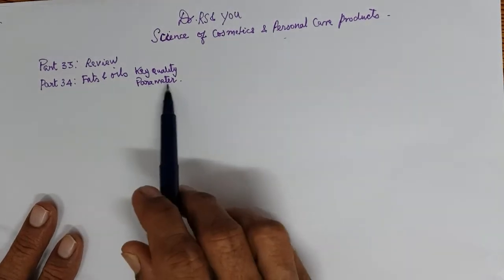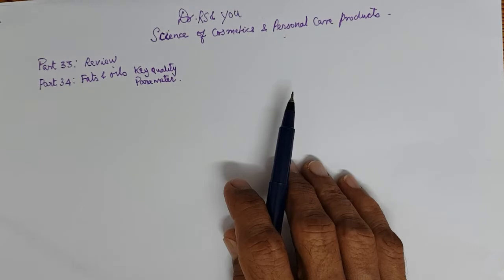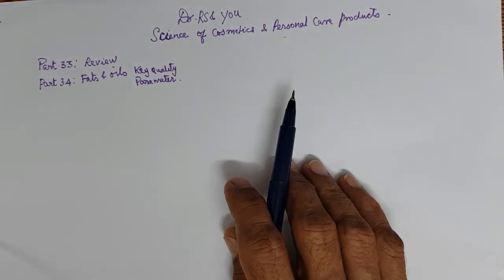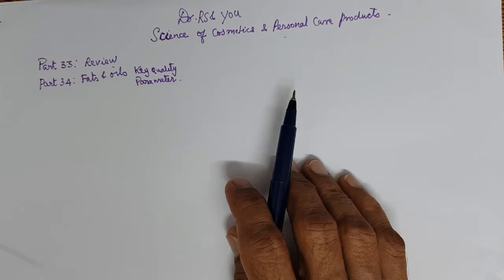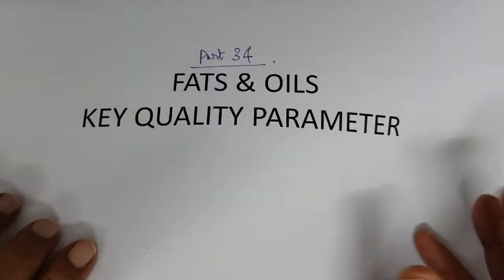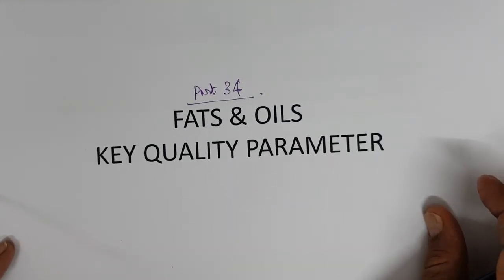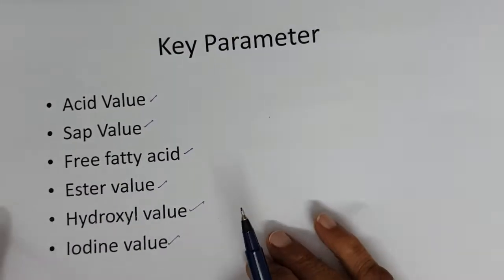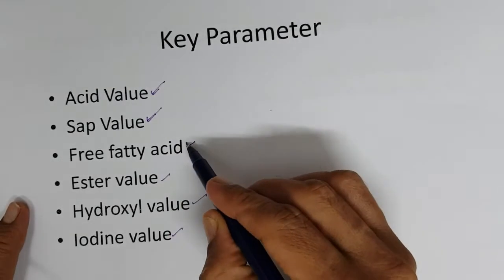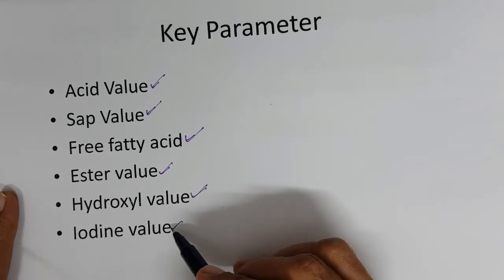So, Part 34, fats and oils, key quality parameters. Fats and oils are widely used in cosmetics, personal care products, and cosmeceuticals. Certain terms I wish you all to get familiarized with — these terms will be used frequently in the following chapters, and some of the aspects will be applied while developing a formulation. The parameters we are going to discuss are: acid value, saponification value, free fatty acid, ester value, hydroxyl value, and iodine value.